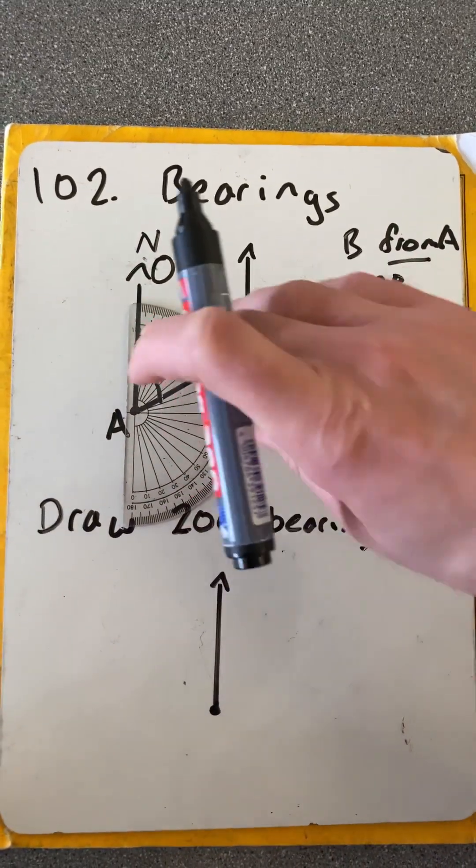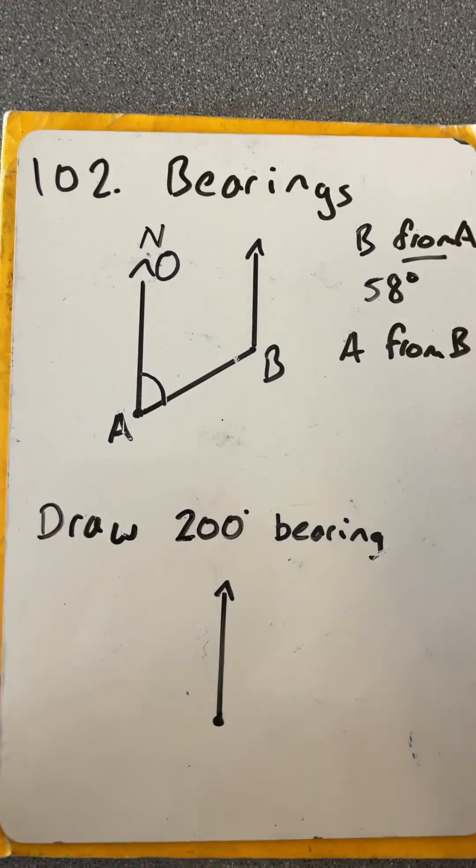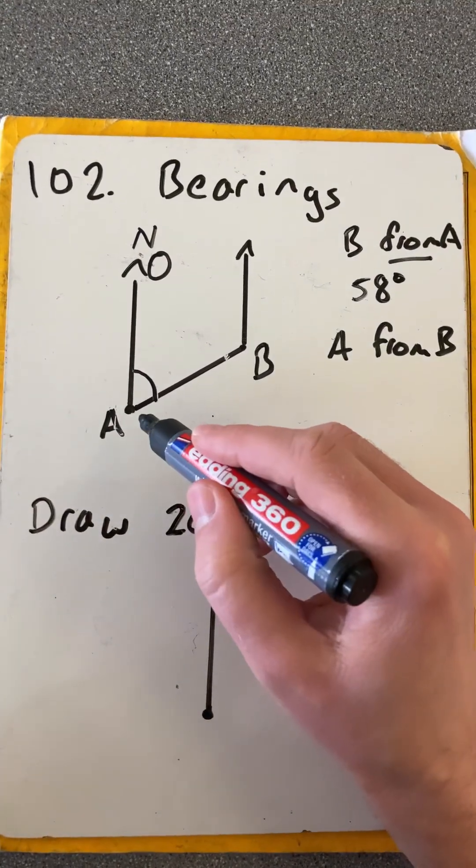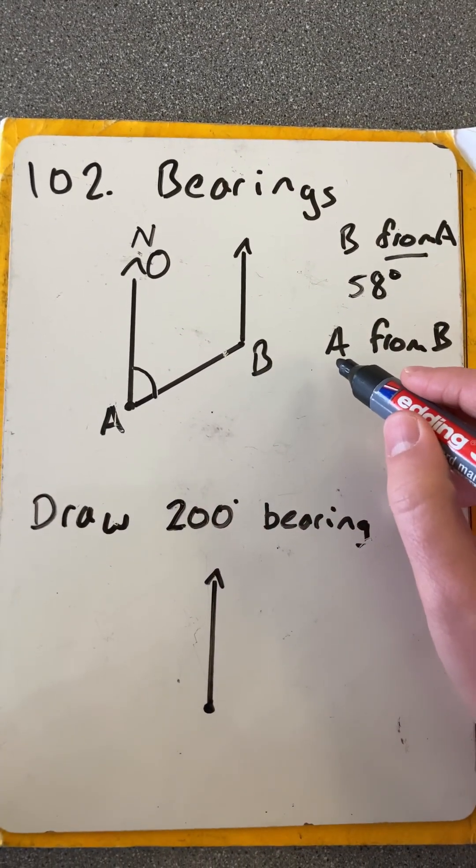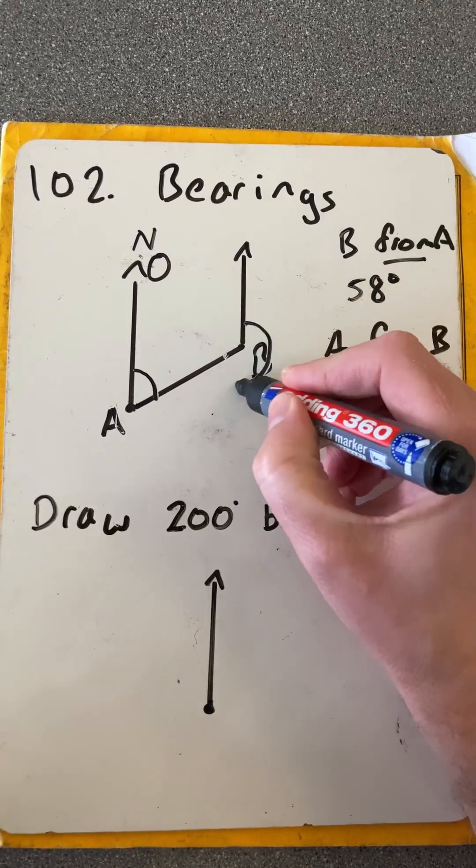Now to go the other way around, to go from B to A. So what is the bearing of A from B? We're going here.